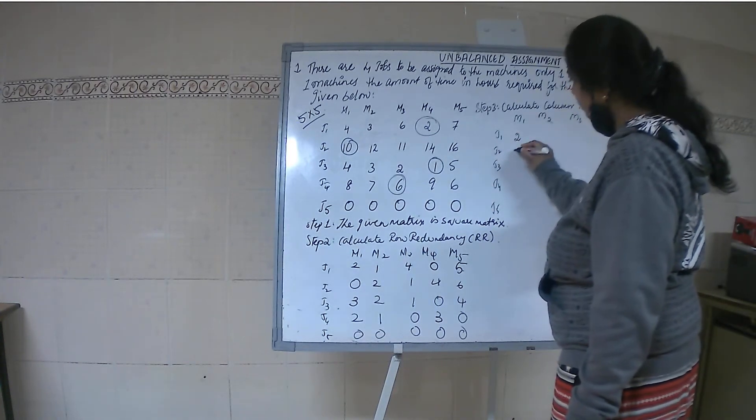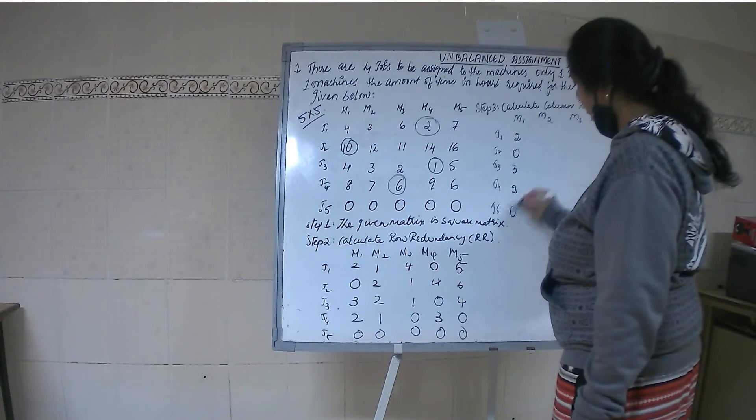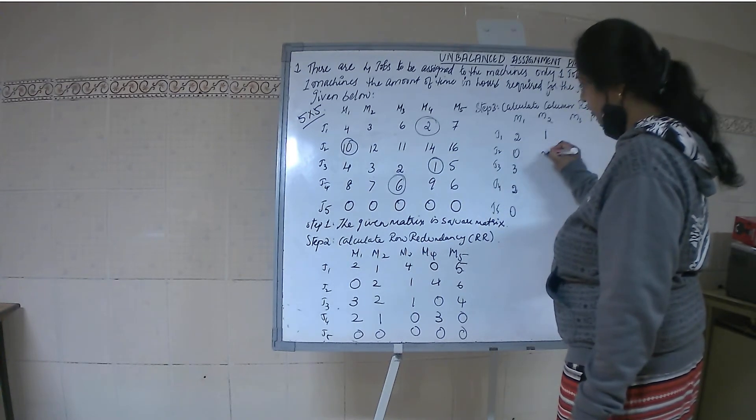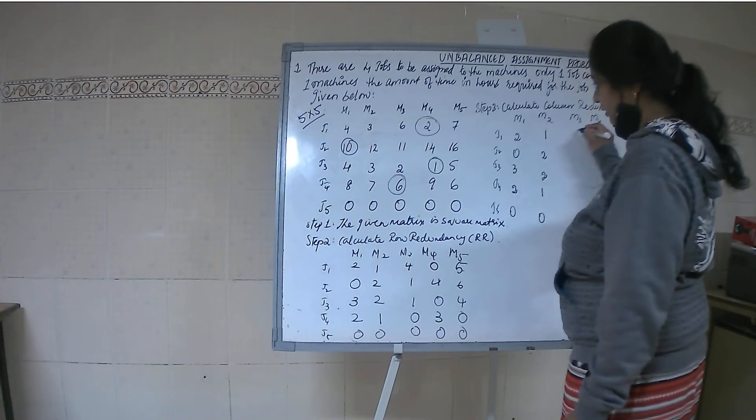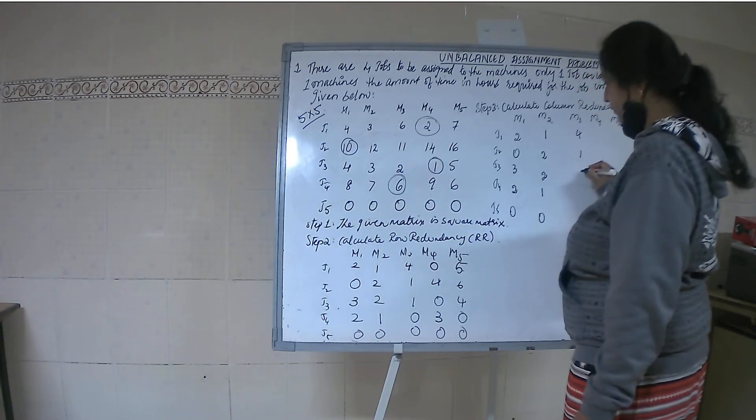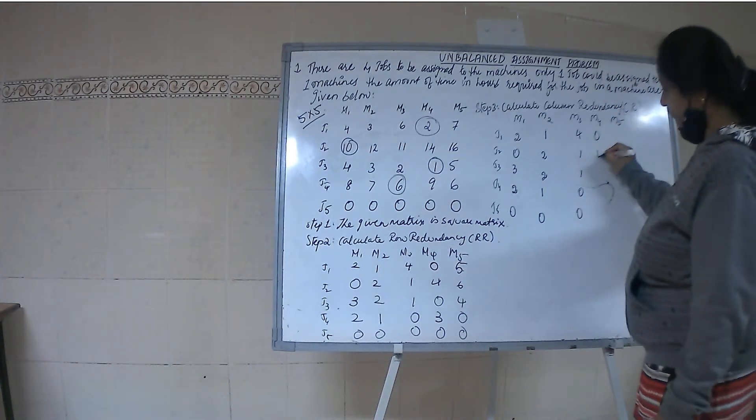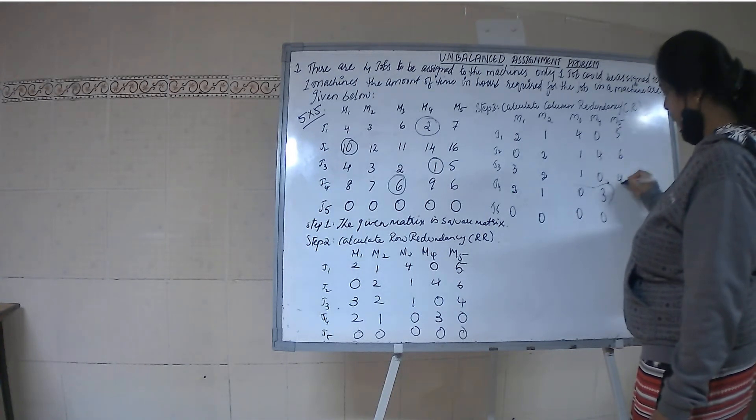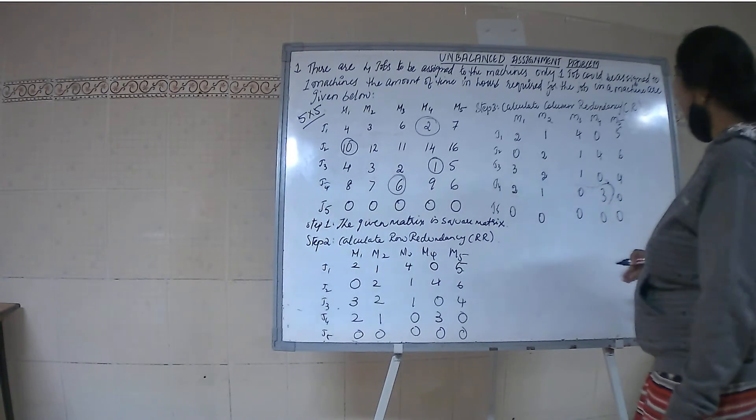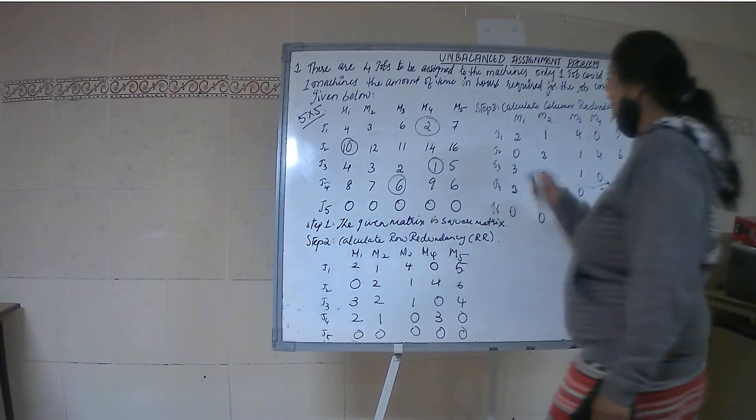So it is 2, 0, 3, 2, 0. Then 1, 2, 1, 1, 0. Next 4, 1, 1, 0, 0. Then 0, 4, 0, 3, 0. And 5, 6, 4, 0, 0. Now can we do step 4 here?